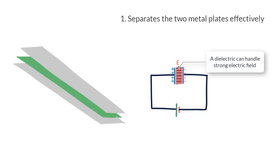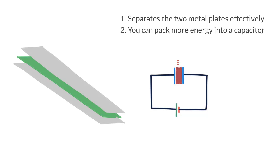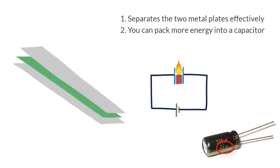As a result you can charge up the capacitor a lot more and therefore have more energy packed into it. But remember that every capacitor with a dielectric still has a limit to which it can be subjected to a voltage or potential difference between the plates, beyond which it will burn up — and you can actually see these limits printed on the capacitor.